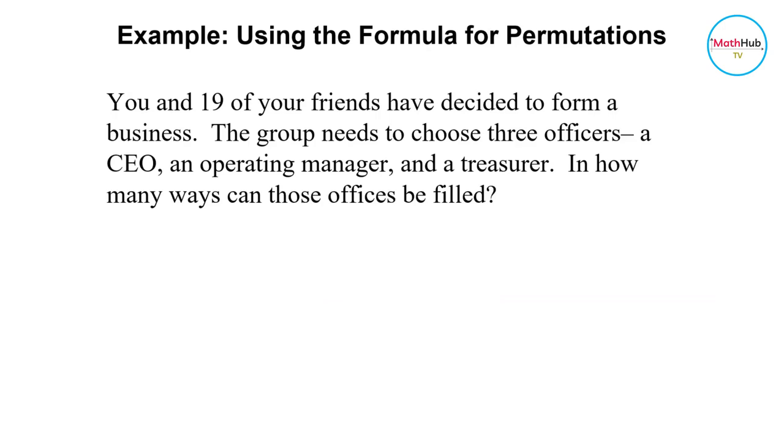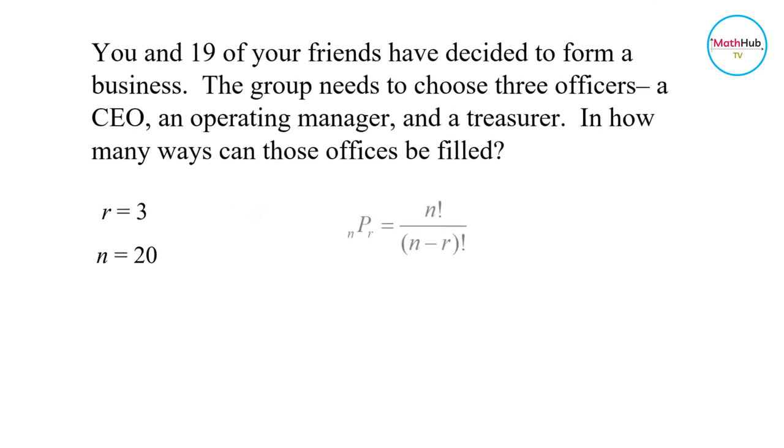We will use the formula for permutations to solve this problem. Your group is choosing r equal to 3 officers from a group of 20 people. So n is equal to 20, 20 because that includes you and 19 of your friends. The order matters because each officer has different responsibilities.